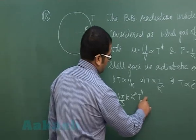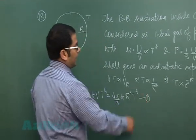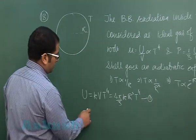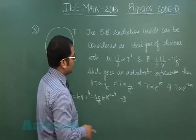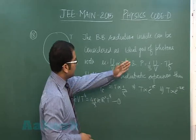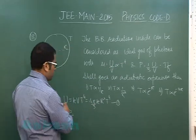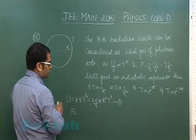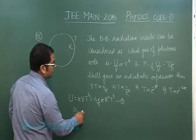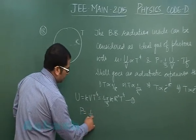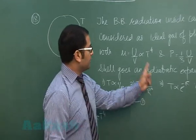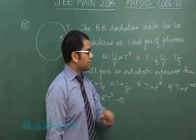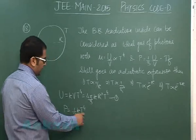From the second expression, I can easily see that P equals 1/3 multiplied by U/V, and U is already this much. So P equals 1/3 times K T raised to the power 4. That's equation number 2.